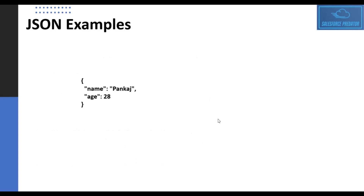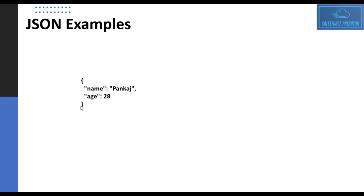In the simplest JSON example, we have a key 'name' with value 'Pankaj', then a comma as a separator, and another key-value pair where 'age' is the key and 28 is the value. Note that this entire content is wrapped inside curly braces — the opening curly brace indicates the start of JSON and the closing curly brace indicates the end.